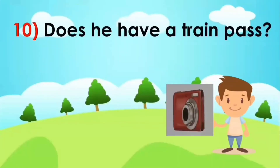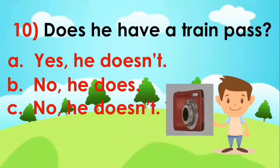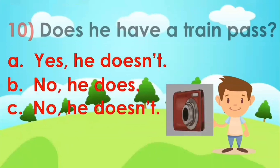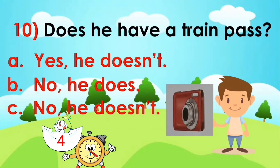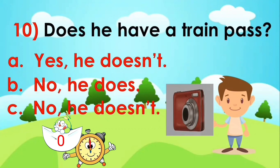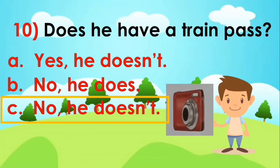The last one: does he have a train pass? A: yes, he does. B: no, he does. C: no, he doesn't. Your time starts now. Time is off. The answer is letter C.